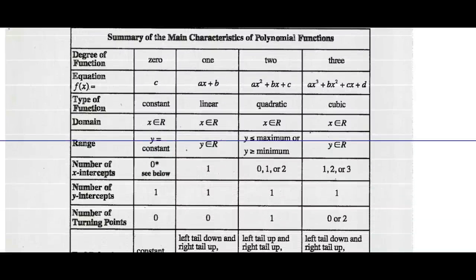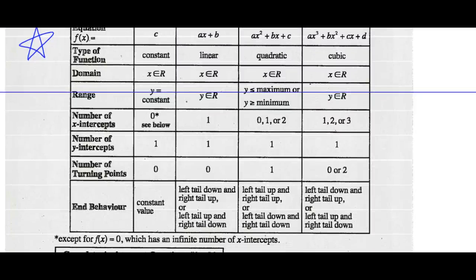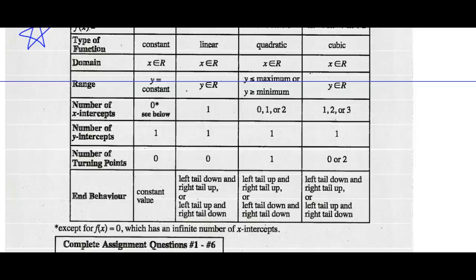A summary of the main characteristics of a polynomial function — a great chart to have — covers degree 0, 1, 2, and 3, listing all the key things we need to know about these polynomial functions. You have your assignment; you can start working on that.